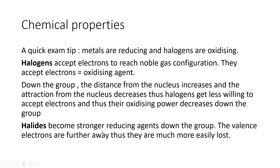Halides, on the other hand, become stronger reducing agents down the group because the valence electron in the ion is further away and more easily lost. Halogens are usually chlorine, bromine, and iodine. Halides are the ions of halogens — iodide, bromide, and chloride. Remember the ending is '-ide': chloride, bromide, and iodide.